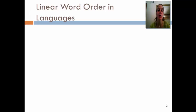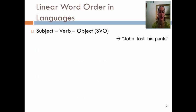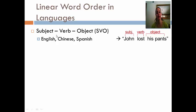Let's talk about linear word order in languages. In English, word order is very important and more rigid than in other languages. For example, in English we say 'John lost his pants' — subject, verb, object. Chinese (Mandarin or Cantonese) also uses subject-verb-object order. Spanish uses SVO as well, but in Spanish you have the option of being a little more flexible with word order.